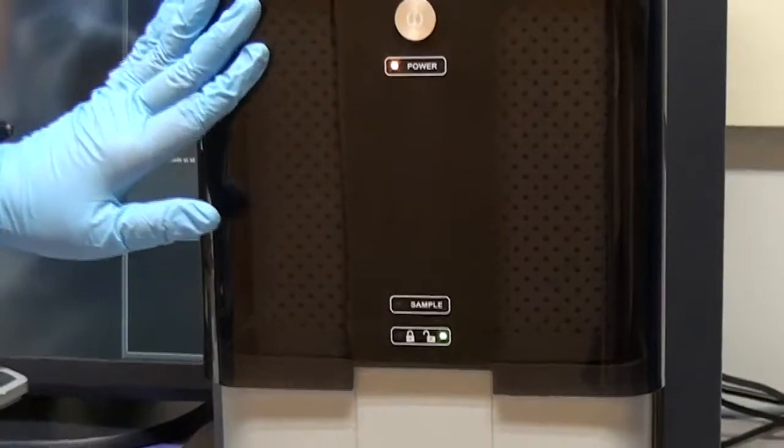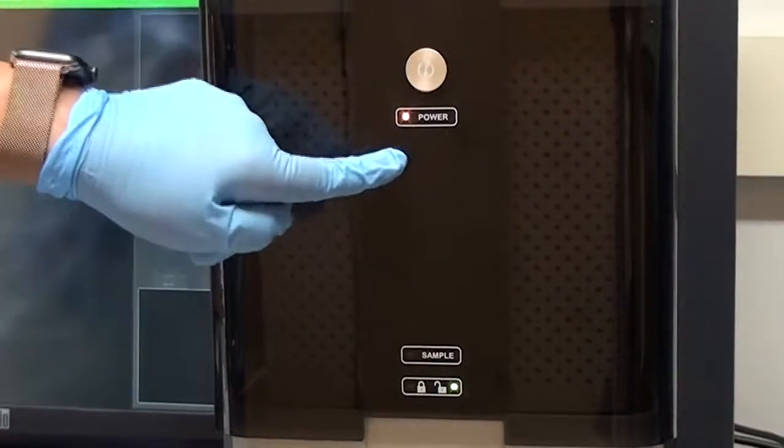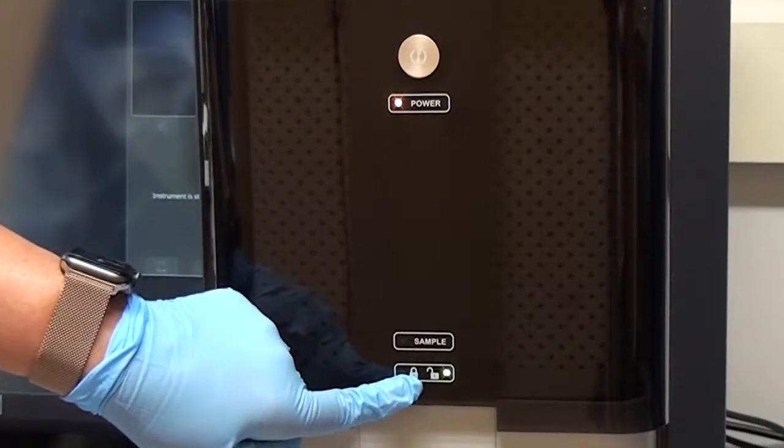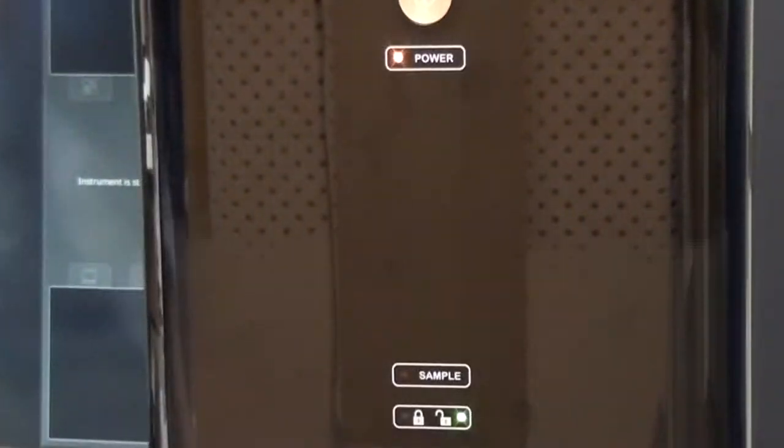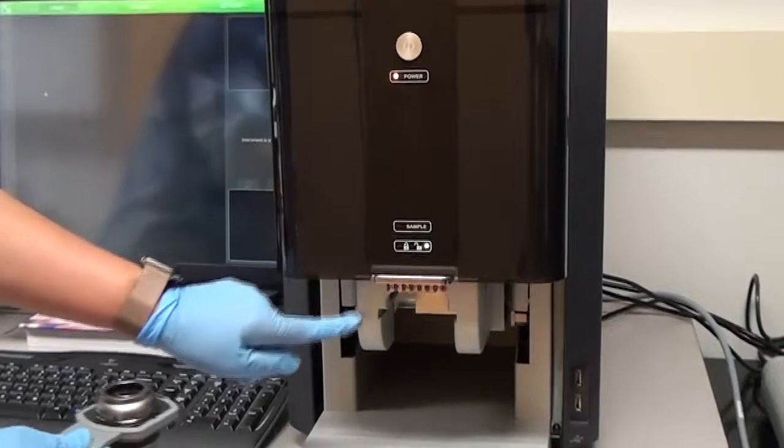The settings on the sample chamber show yellow light and unlocked sign. The chamber door is lifted and we see the grooves here in the slot.